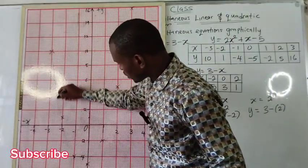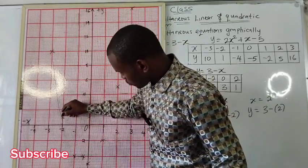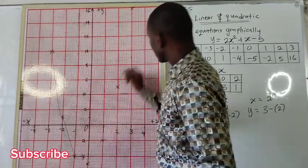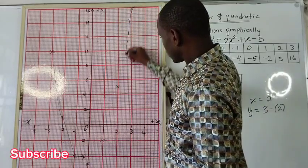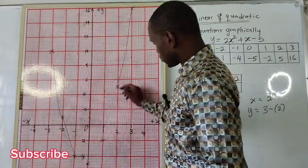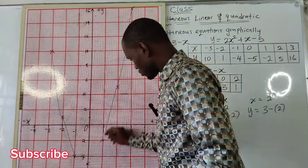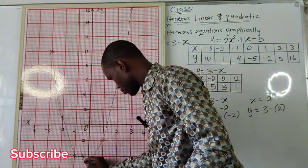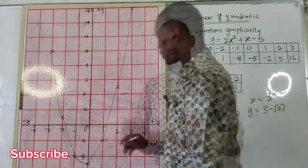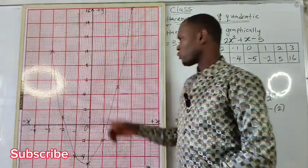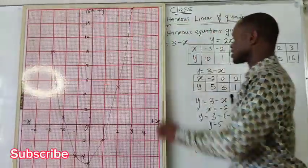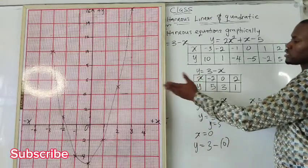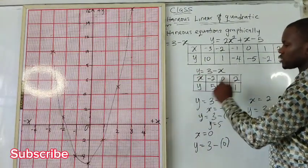Get all the points joined together in a smooth curve. Having drawn the curve for the quadratic equation, the next thing we are going to do is to draw the line for the straight-line equation.